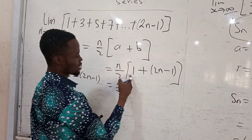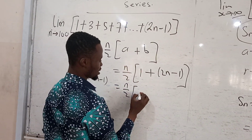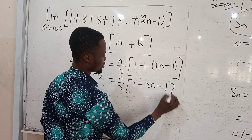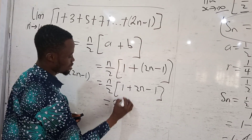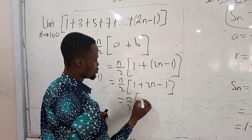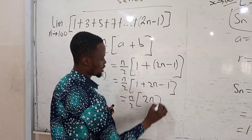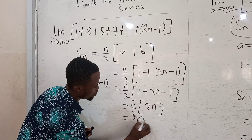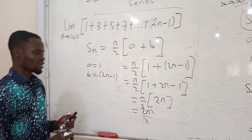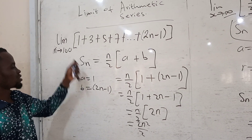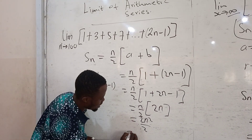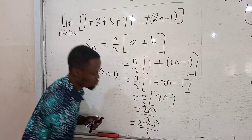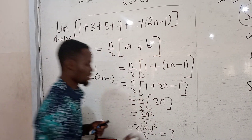Simplifying: 1 minus 1 gives 0, so you are left with n over 2 times 2n, which equals 2n squared over 2, or n squared. Then substituting in the limit, you get something like 2 times 100, all squared and divided by 2.